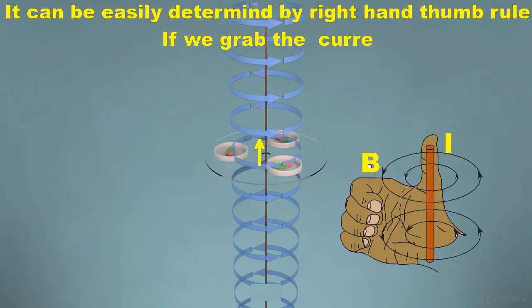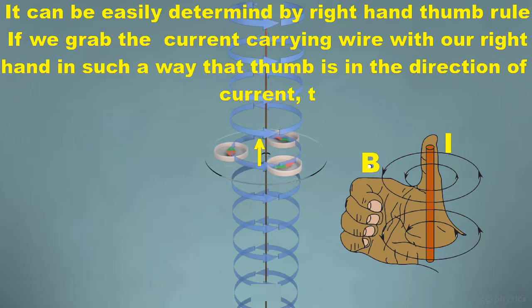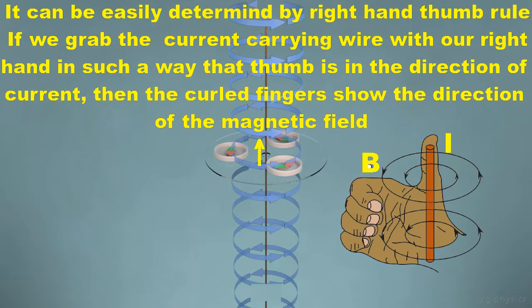It can be easily determined by right hand thumb rule. If we grab the current carrying wire with our right hand in such a way that thumb is in the direction of current, then the curly fingers show the direction of the magnetic field.